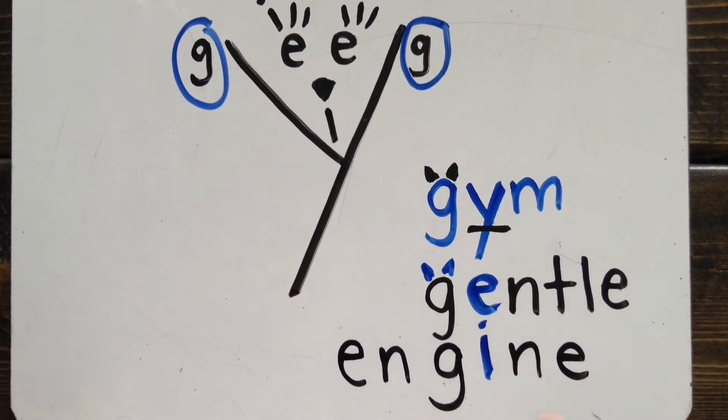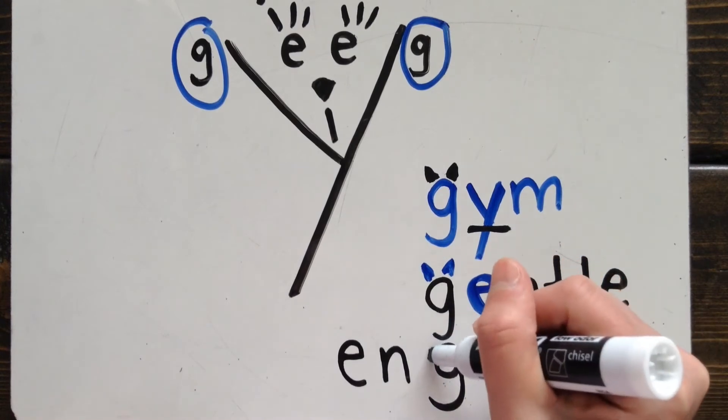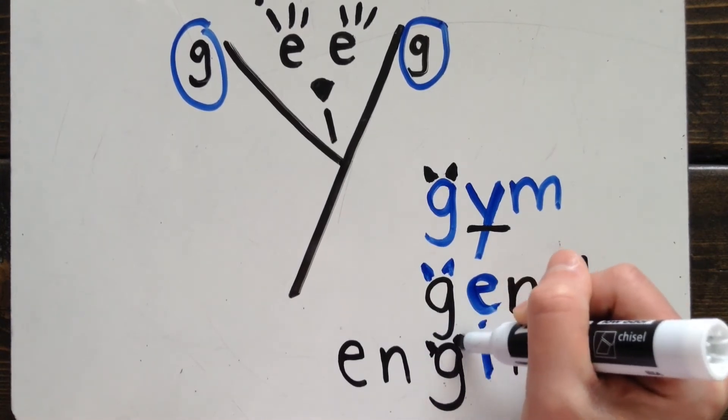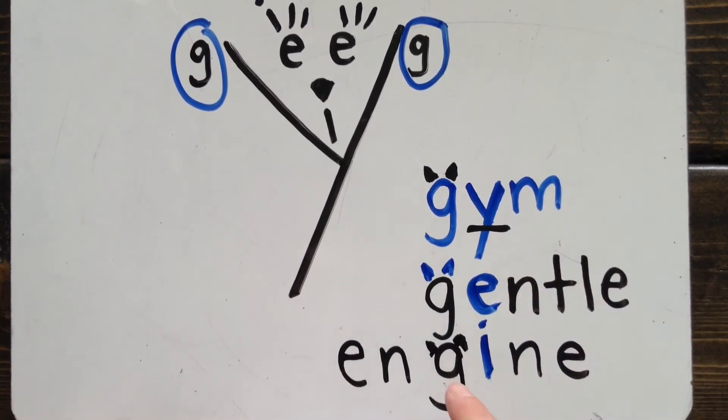This is the word engine. If I want to know if this is a soft G or a hard G, I have to look at the letter that comes next. In this case, it is I. And I is in my Gigi Cat picture. So I know this G will have cat ears and say j. Engine. Jim. Gentle. Engine.